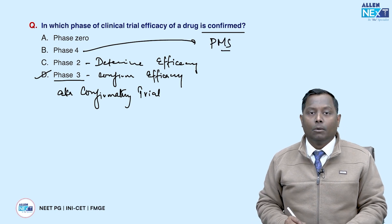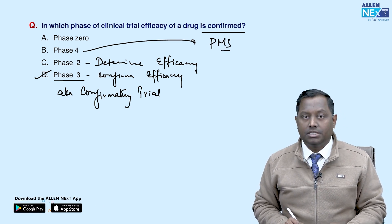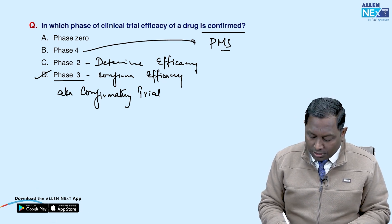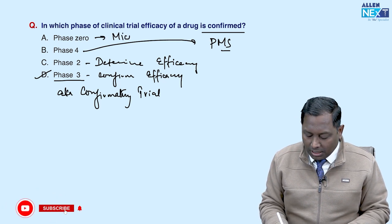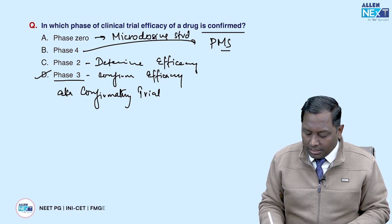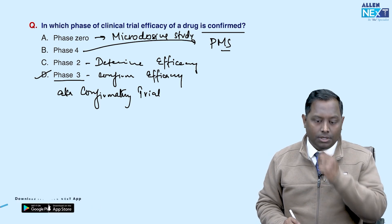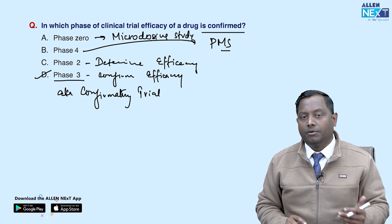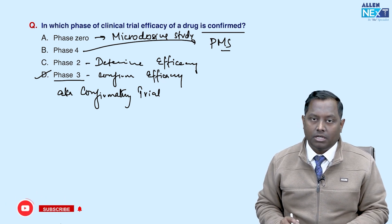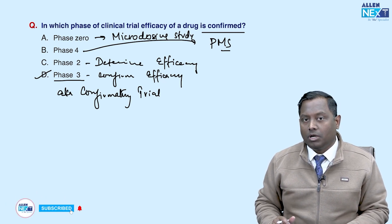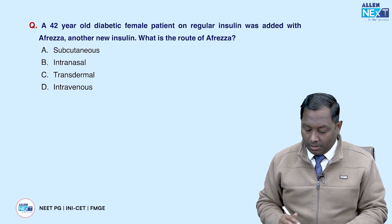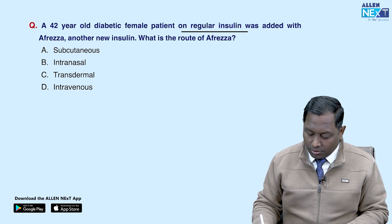Phase 4 is post-marketing surveillance (PMS), done once the drug is launched in the market. Phase 0 is a micro-dosing study — it is a non-mandatory trial that performs pharmacokinetic analysis. The drug is radiolabeled and followed inside the body to check whether first-pass metabolism is high or how much absorption occurs.